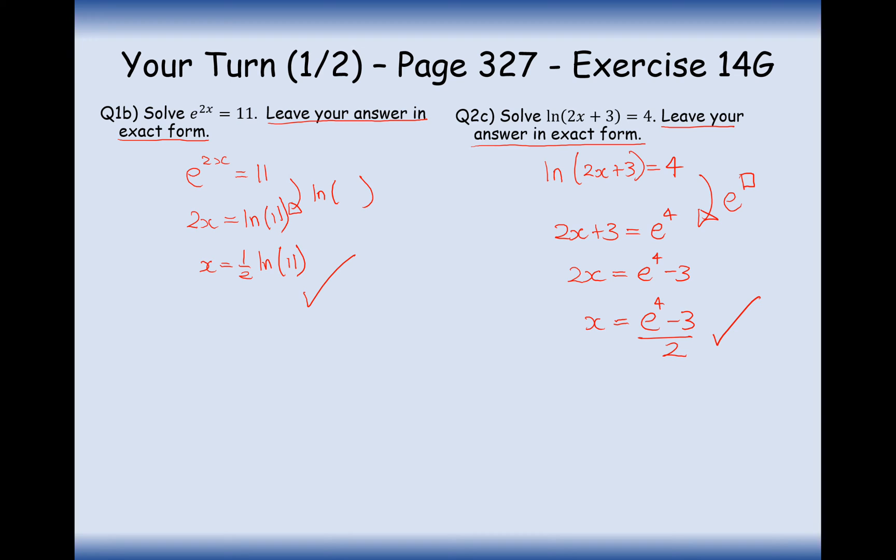Now notice here that we could have worked out the numerical values to say three significant figures of both our answers here. The reason I haven't is because it does say leave your answer in exact form on both of these questions here. And when it says leave your answer in exact form, that means you need to include ln's. It means you need to include e's. It means you need to include square roots if you get a square root. It means you need to include pi if you get a pi in your answer. Minus 13 over 7 would be in exact terms. But what you shouldn't have is any decimals. When it says in exact terms or in exact form, no decimals are allowed.